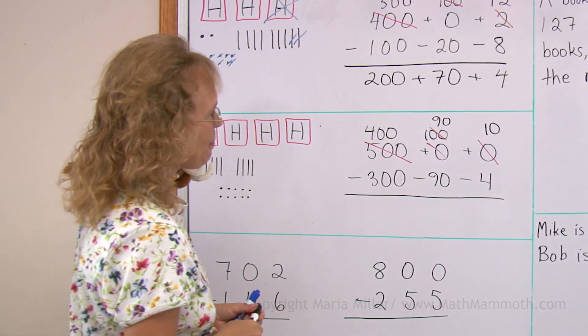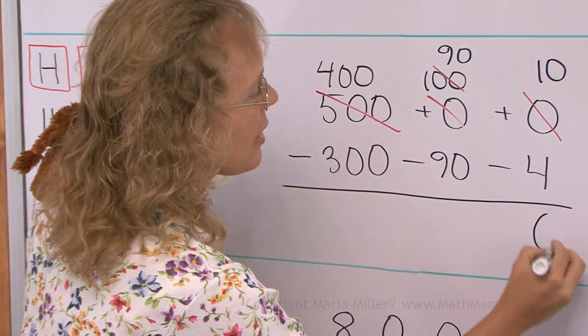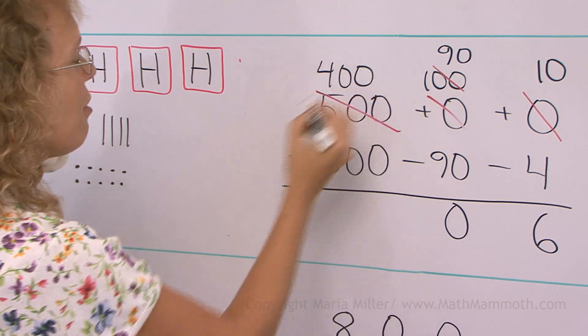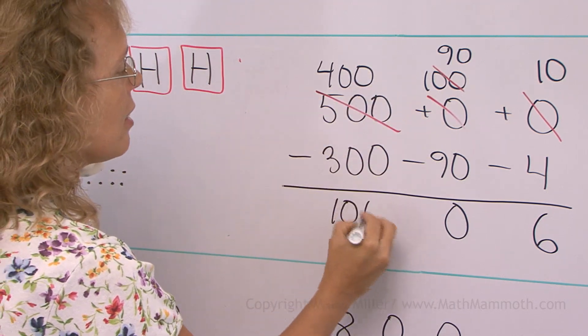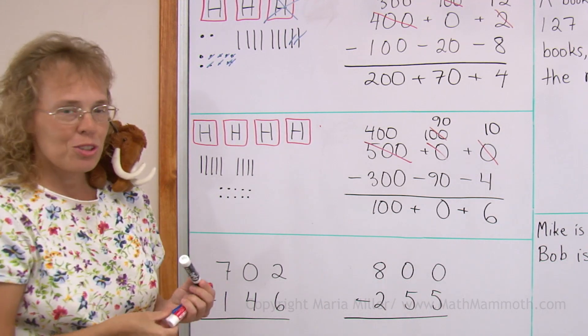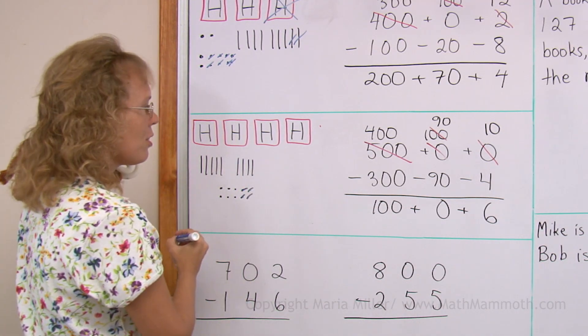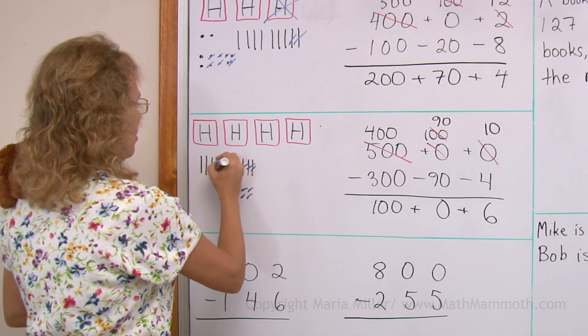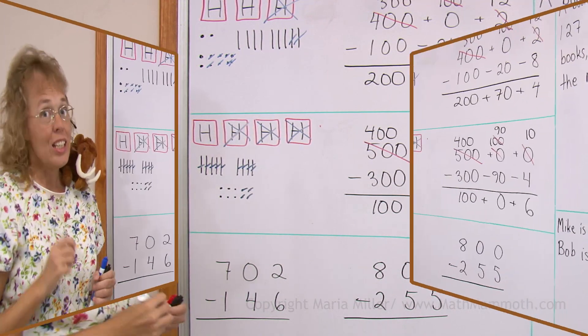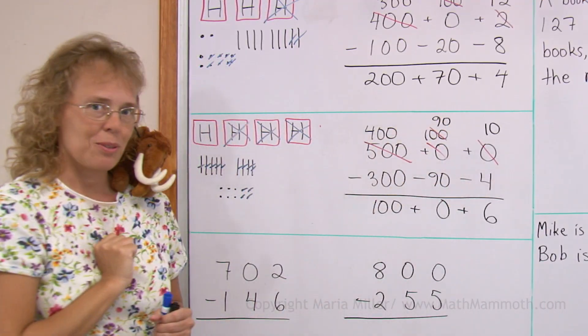Now, ready to subtract. 10 minus 4 would be 6. 90 minus 90 would be 0, and then 400 minus 300, 100. And of course you can cross out those things in the picture too. 4 of those, all of these, and then 3 of these. You might want to practice using this kind of model for the subtraction.